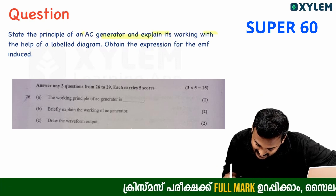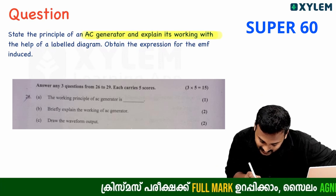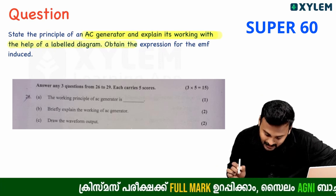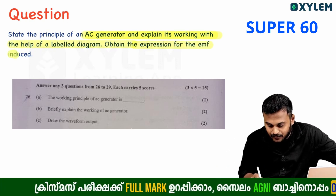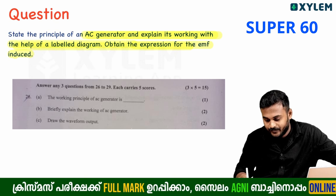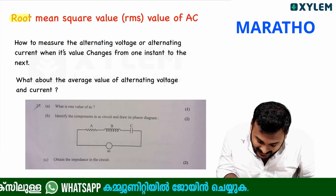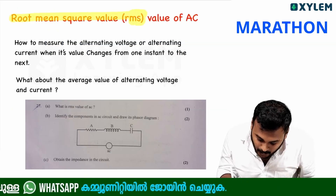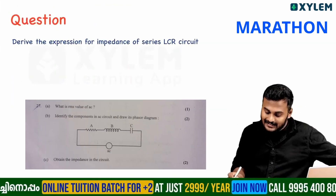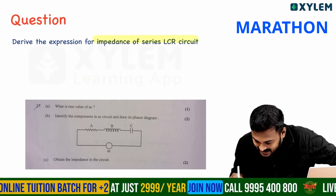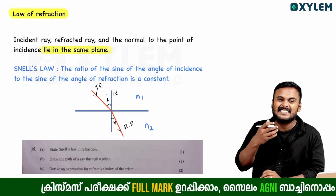AC is a very important thing. That's the construction and working. RMS value is root mean square value. Derive with expression for impedance of LCR circuit.